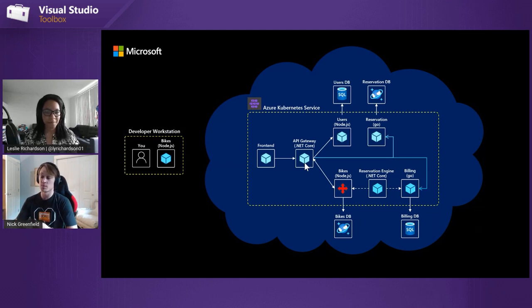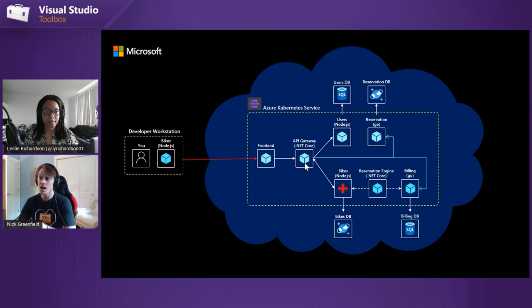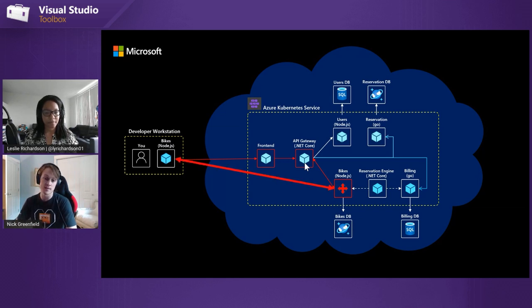When I select the Bikes microservice, we put a redirector in place so that when a request goes into the front end of my application running in AKS, it will continue to hit all the services running in the cluster until the Bikes service is called. At that point, that request will be routed to my development workstation where the version I'm running locally will receive it.